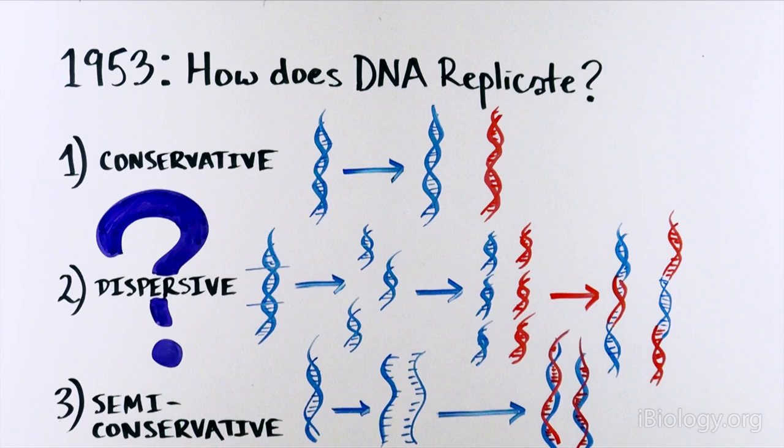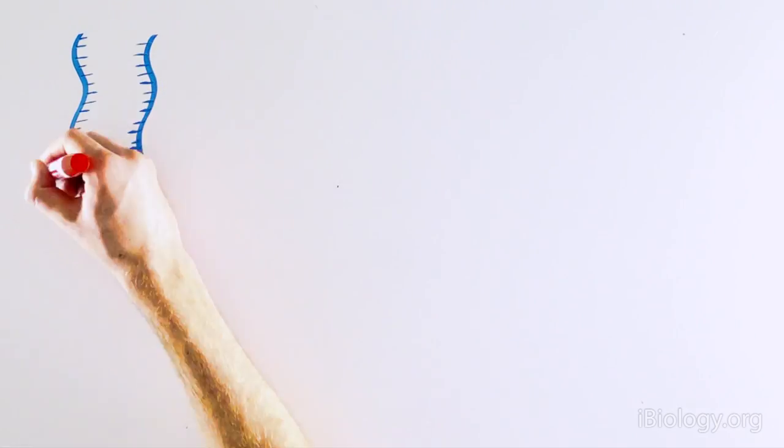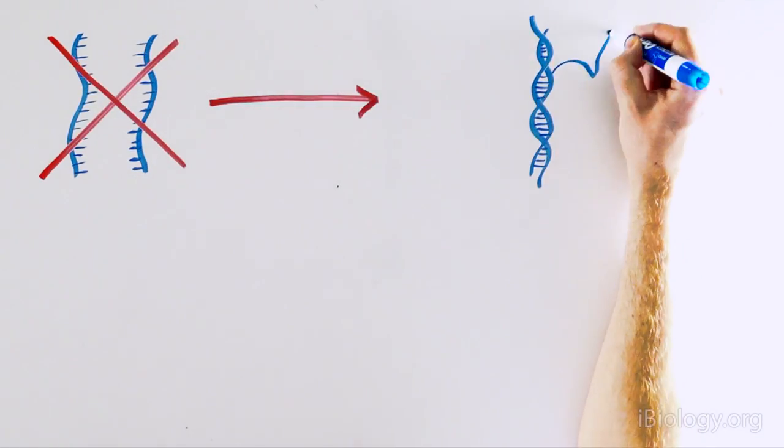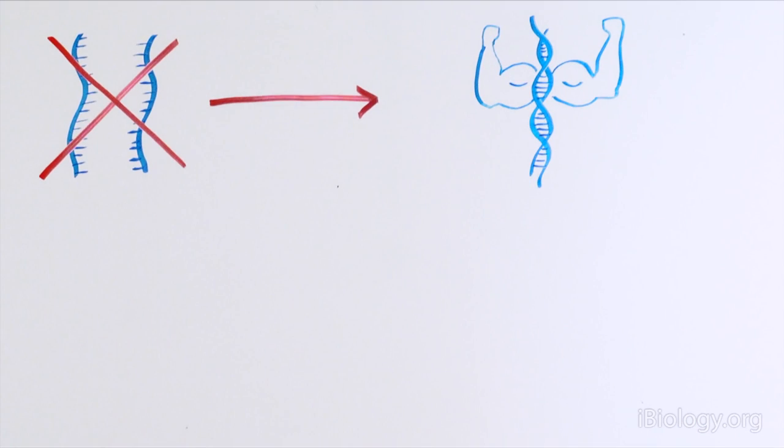But which one was it? Many scientists did not believe that two DNA strands could separate because of how strong a DNA molecule is, so they were skeptical of the semi-conservative model.